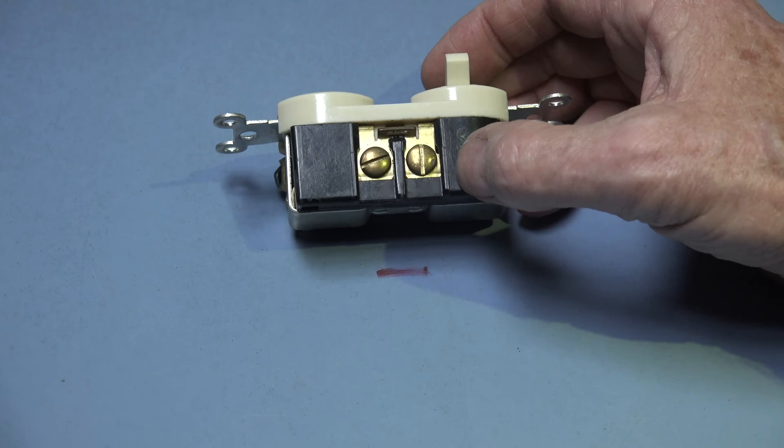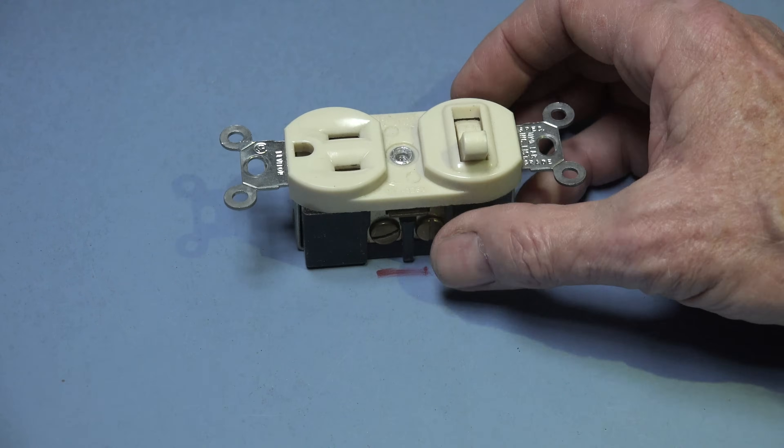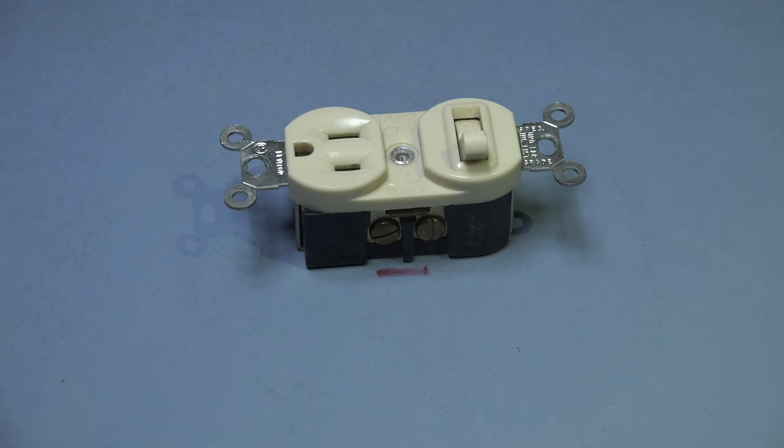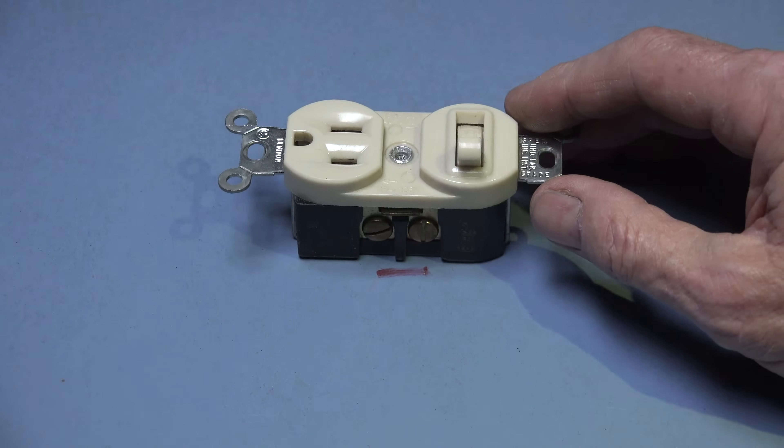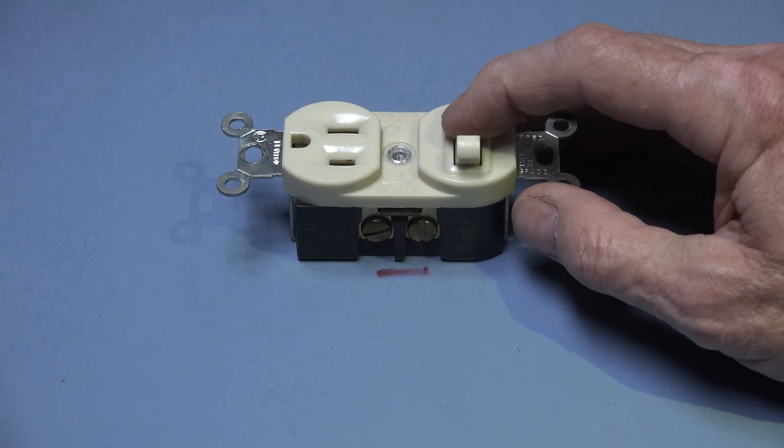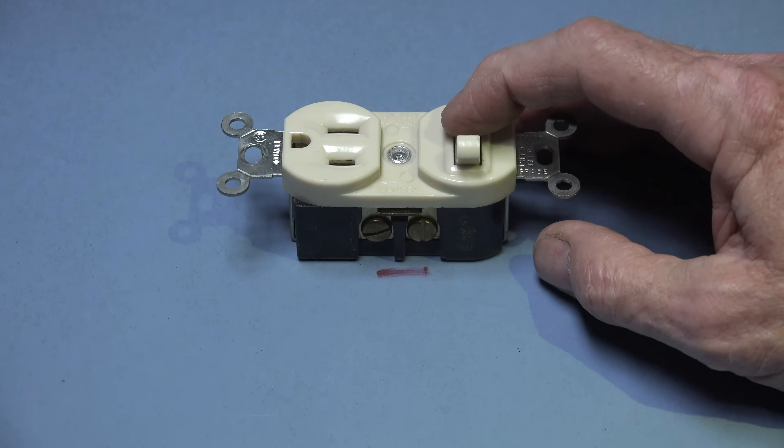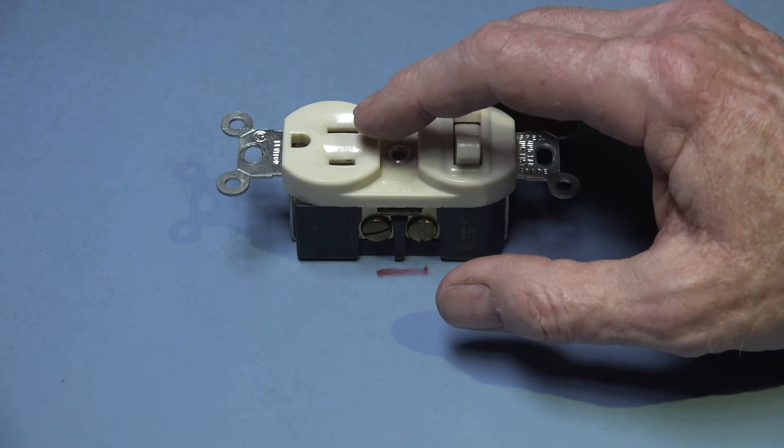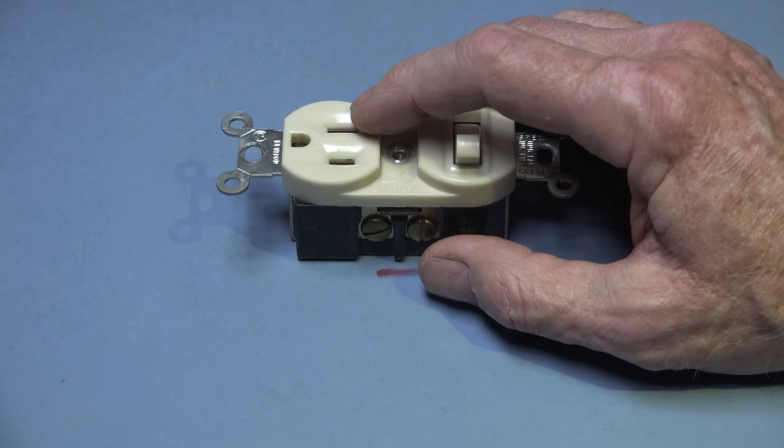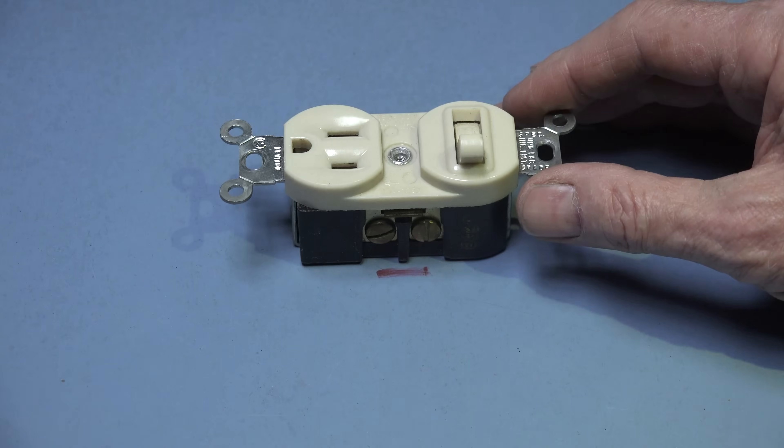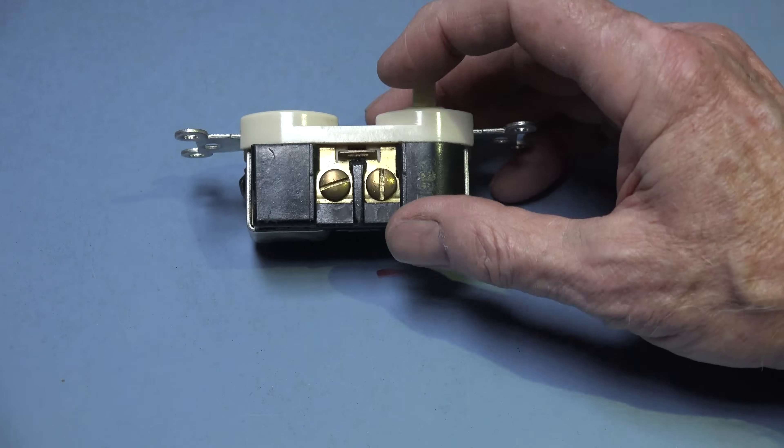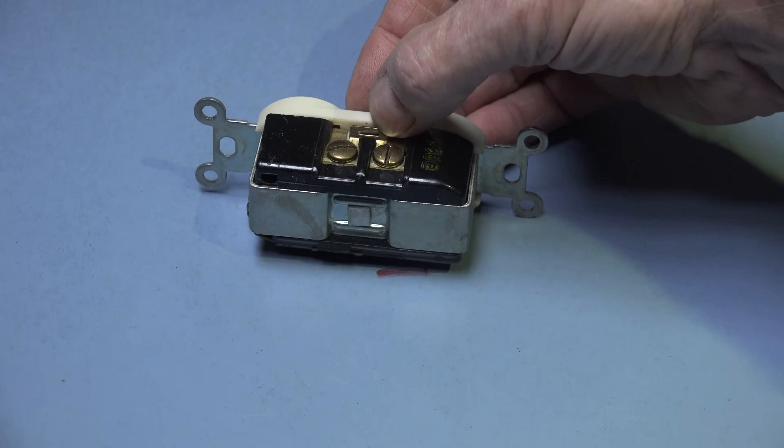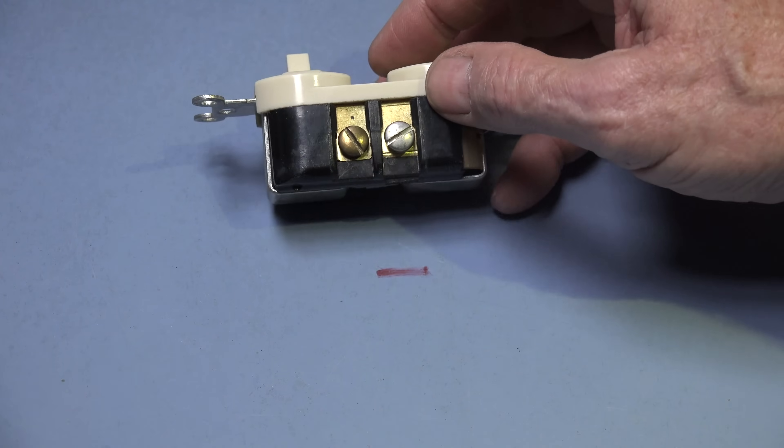Now one more way I could set this up: I could have the switch control the appliance but the outlet on a different circuit. I could do that too. So in that case I would take the bridge and I would break the bridge off.